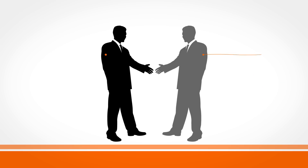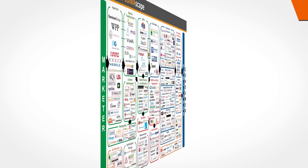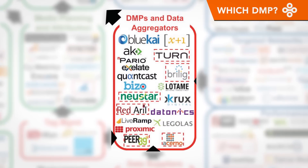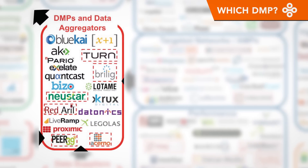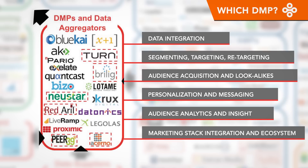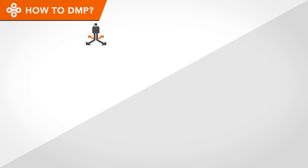Now that you know what DMPs are all about, let's talk about finding the right one. There are many options, so which one to choose? It really depends on your marketing program, your goals, and current systems and processes. Then you can match the features to a DMP that fits.